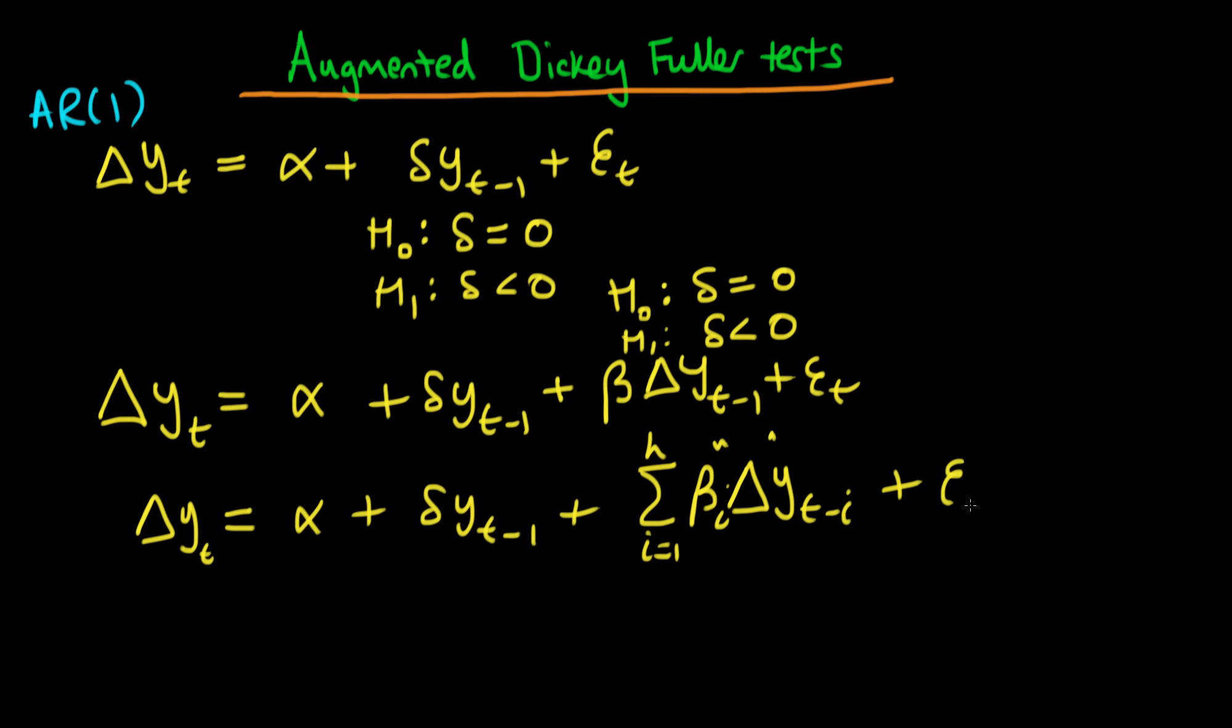Then finally we have our error term ε_t. Just as with an AR1 process, the null hypothesis is that delta equals 0 against the alternative that delta is less than 0. Under the null hypothesis, we conclude we have a non-stationary time series.